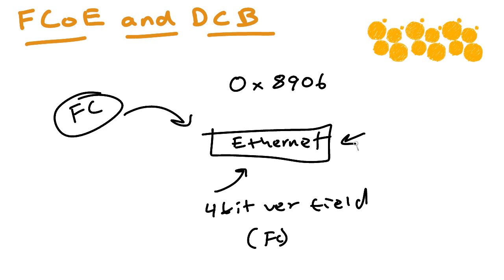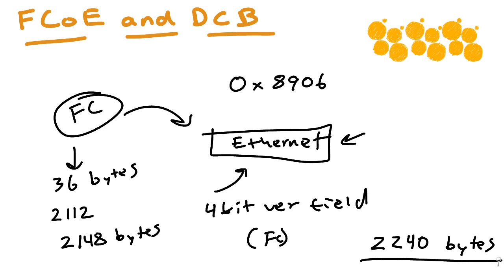Now, what about the size? Well, a fiber channel frame consists of 36 bytes of headers and as many as 2,112 bytes of data for a maximum size of 2,148 bytes. So the encapsulated fiber channel frame has all the standard headers, and we need to accommodate this maximum fiber channel frame in our fiber channel over Ethernet frame. So, we define a default MTU for the fiber channel over Ethernet of 2,240 bytes.